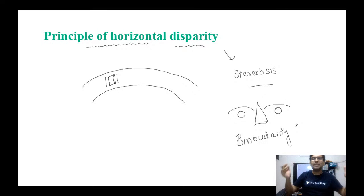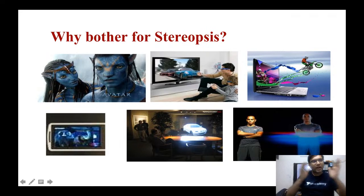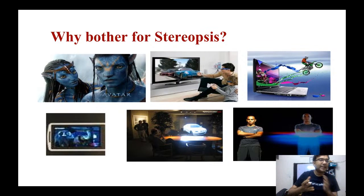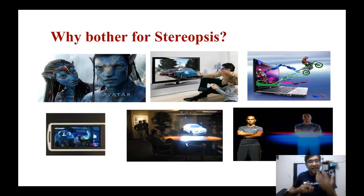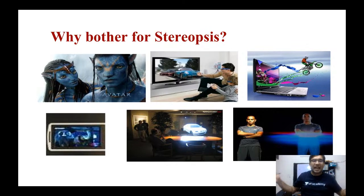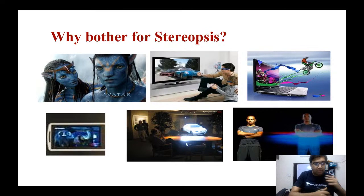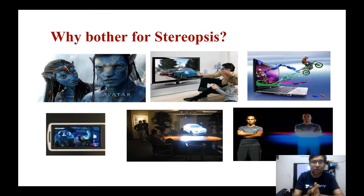In ophthalmology, everything is measured, and for stereopsis we also have a unit — the arc. Why do we need stereopsis? We have 3D pictures, 3D games, 3D matches, and 3D movies — everything in life basically needs stereopsis, needs depth perception. If binocularity is not maintained, or if the principle of horizontal disparity is not obeyed, then the patient will have defective stereopsis.